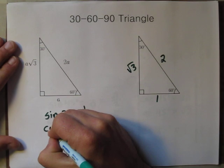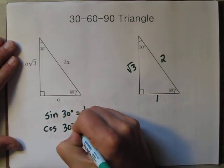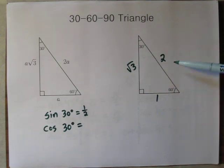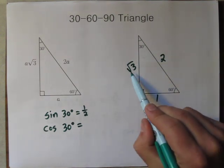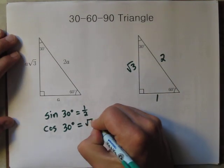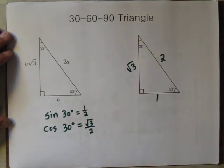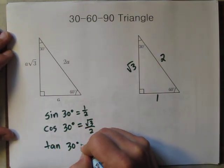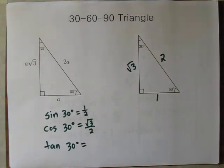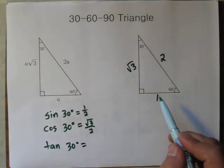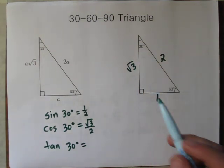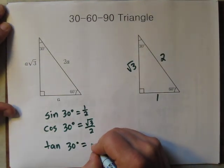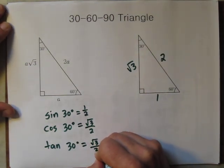If 30 degrees is our angle, sine represents opposite over hypotenuse, so sine 30 degrees is 1 over 2. Cosine of 30 degrees would be adjacent over hypotenuse, which is √3 over 2. Tangent of 30 degrees is opposite over adjacent — 1 over √3 — which after rationalizing ends up being √3 over 3.